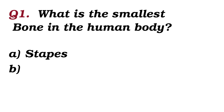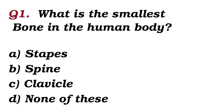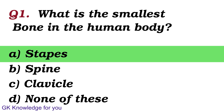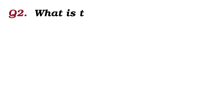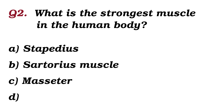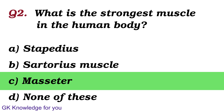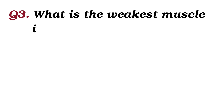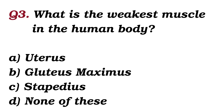What is the smallest bone in the human body? The answer is stapes. What is the strongest muscle in the human body? The answer is masseter. What is the weakest muscle in the human body? The answer is stapedius.